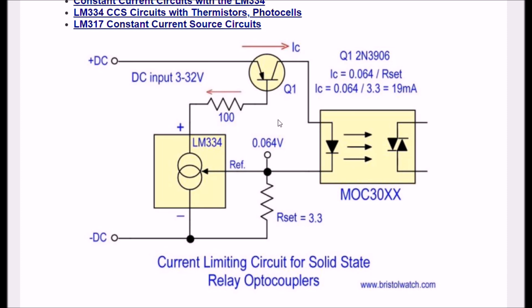If you need a little more current - if you use a 2.7 ohm, that will give you 24 milliamps. If you use a 1 ohm, it'll give you 64 milliamps. Do not use a 1 ohm with an optocoupler, because their LEDs are max 60 milliamps. Around 20 milliamps, from what I've seen, is plenty.